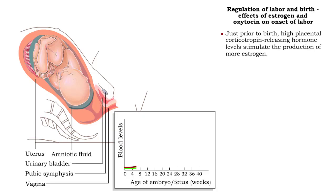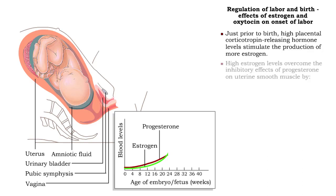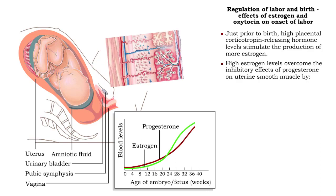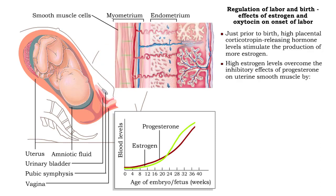Just prior to birth, high levels of placental corticotropin-releasing hormone stimulate the production of more estrogen. As the level of estrogen surpasses that of progesterone, uterine contractions are no longer suppressed.